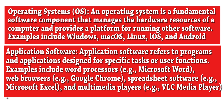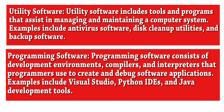Examples of application software include word processors like Microsoft Word, web browsers like Google Chrome, spreadsheet software like Microsoft Excel, and multimedia players like VLC Media Player. Utility software includes tools and programs that assist in managing and maintaining a computer system. Examples include antivirus software, disk cleanup utilities, and backup software.